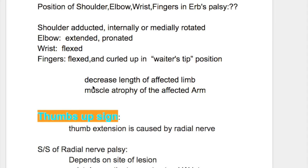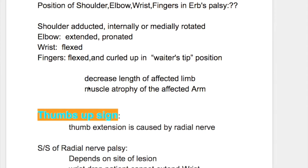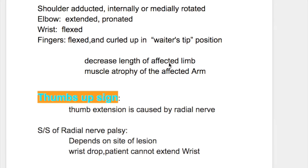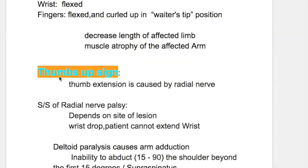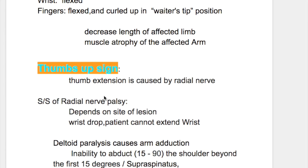In addition, in a long-standing case, there is decreased length of the affected limb and muscle atrophy of the affected arm. What's the importance of the Thumb Up Sign? Thumb extension is caused by the Radial Nerve, so a positive Thumb Up Sign is an indication that the Radial Nerve is normal.